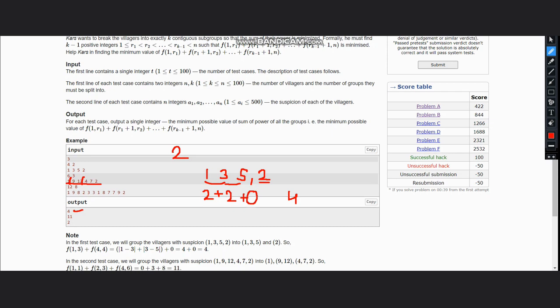For the group 4, 7, 2, we have 4 minus 7 absolute difference which is 3, plus absolute difference of 7 and 2 which is 5. So the answer comes out to be 11, which is the output.